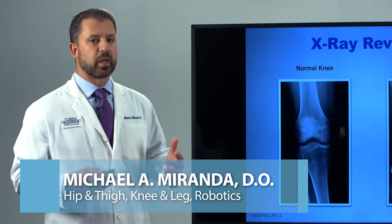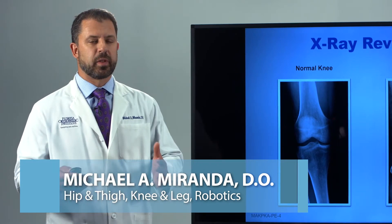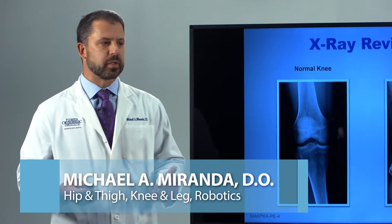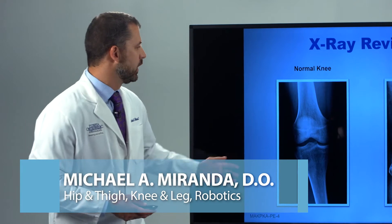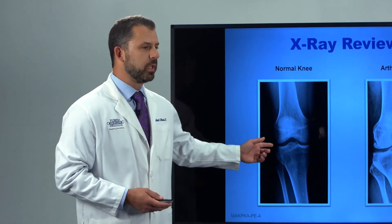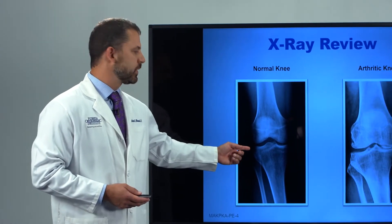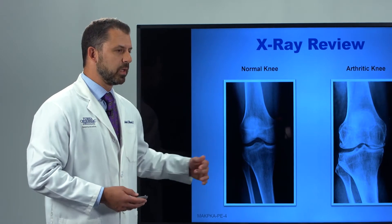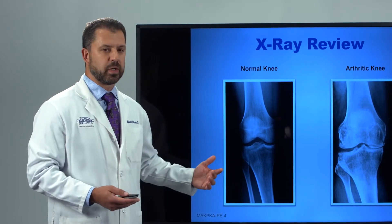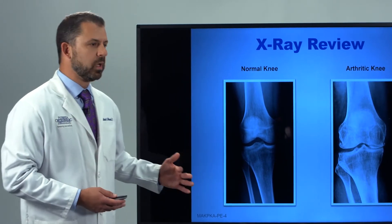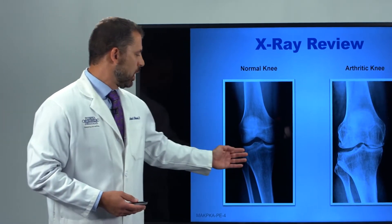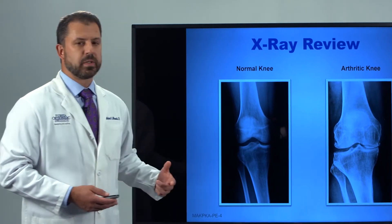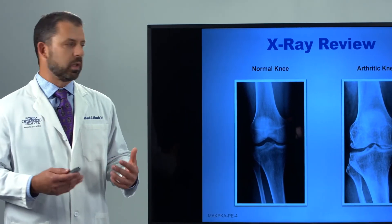So, review of x-rays — what does it look like on an x-ray? When you come to the office, we get an x-ray on every patient to see what the joint looks like. So particularly on a knee, this is a normal knee here. You can see that there's good space in between the two bones, meaning that the cartilage is there. You can't see the cartilage on an x-ray, but you can see just the bone. So theoretically, because there's space here, there's cartilage.